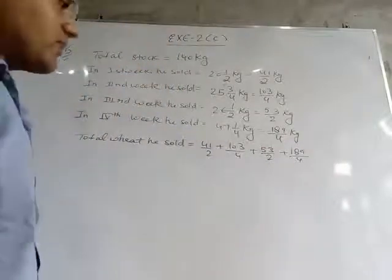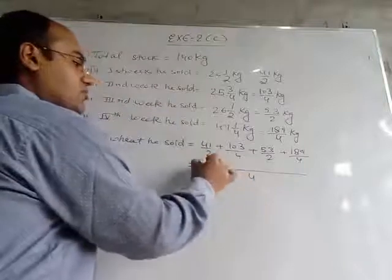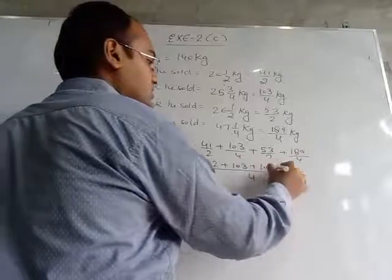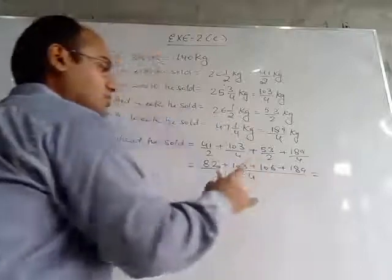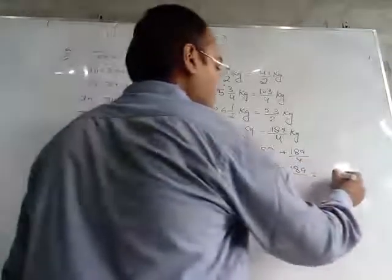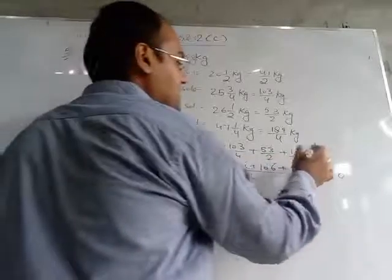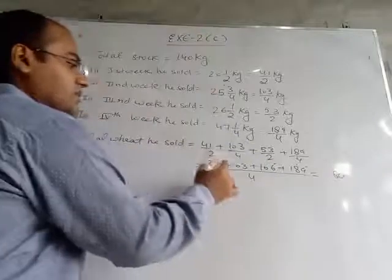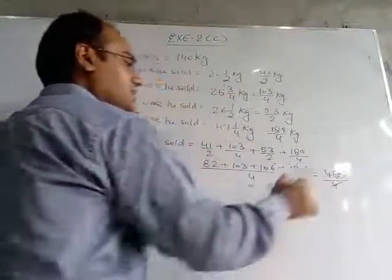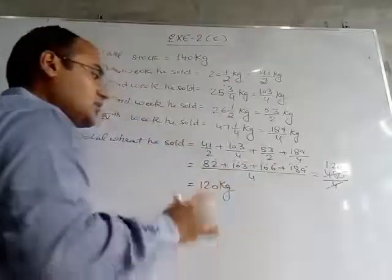To find the total wheat, we add all values. LCM of 2 and 4 is 4. Converting: 2 × 41 = 82, so we get 82/4 plus 103/4 plus 106/4 plus 189/4. Adding the numerators: 82 + 103 + 106 + 189 = 480 upon 4. Cancelling gives 120 kg of wheat sold in the first four weeks.